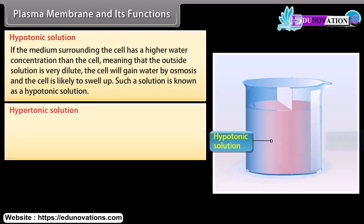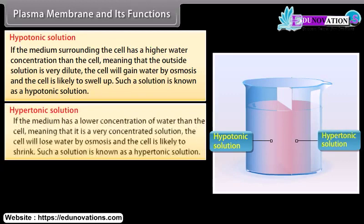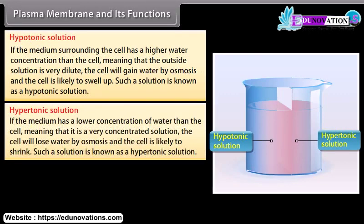Hypertonic solution: If the medium has a lower concentration of water than the cell, meaning that it is a very concentrated solution, the cell will lose water by osmosis and the cell is likely to shrink. Such a solution is known as a hypertonic solution.